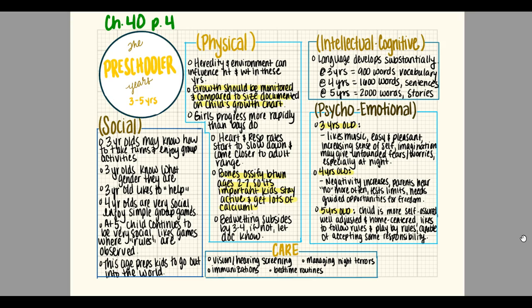For physical development of the preschooler, heredity and environment can influence height and weight. Growth should be monitored and compared to the child's own growth chart, not to other kids. Girls progress more rapidly than boys. Heart and respiratory rates start to slow down and come closer to adult ranges. Bones ossify between ages two and seven, so it's important that kids stay active and get lots of calcium. Bedwetting (nocturnal enuresis) will usually subside by age three to four; if not, they can see the doctor for solutions.